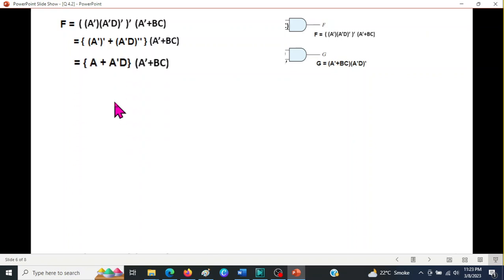A'' is A. Similarly, this double dash cancels to give A'D. And now we can multiply each term. So we will get this relation. And now we will use the formula X·X' = 0. That means this will become 0. So this is the remaining term.